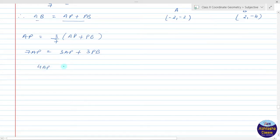So this 3AP goes to the other side: 7AP - 3AP = 4AP. Therefore 4AP is equal to 3PB, which gives us AP/PB = 3/4.